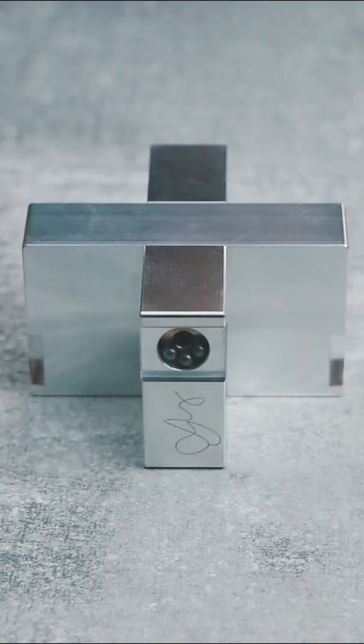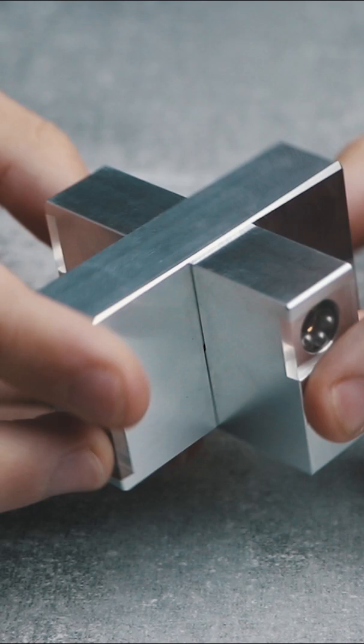This is the Swita cross by Will Stribos. It's a beautiful aluminum cross and your goal is to take apart the two pieces of the cross.